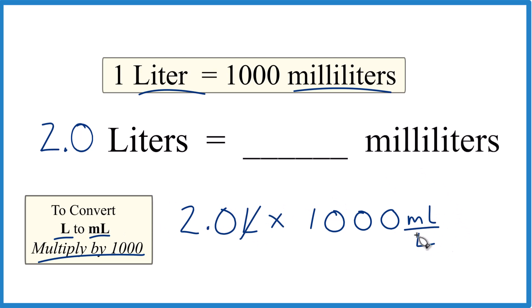Now when we multiply, we have liters on the top and the bottom. They cancel out. We're going to be left with milliliters, and that is what we're looking for.